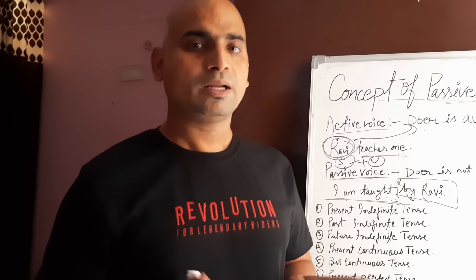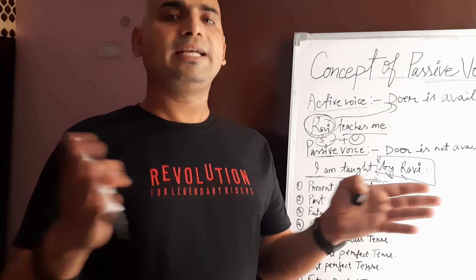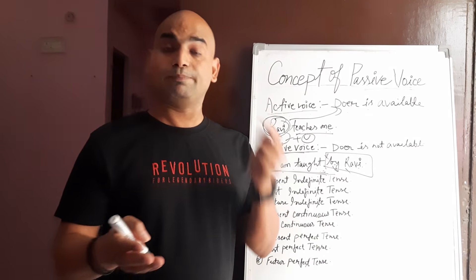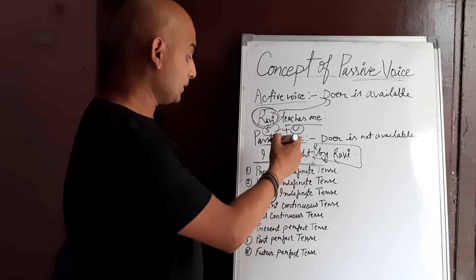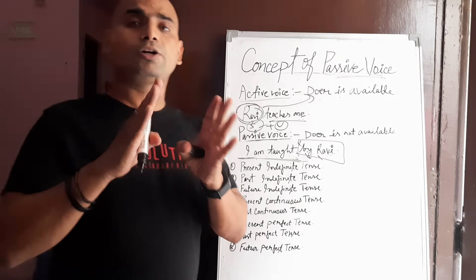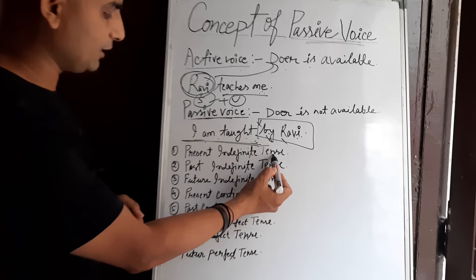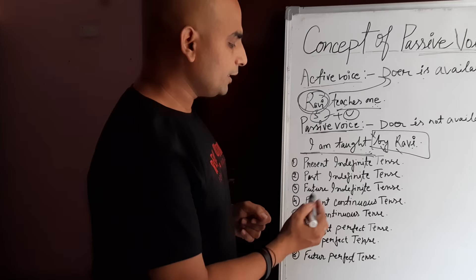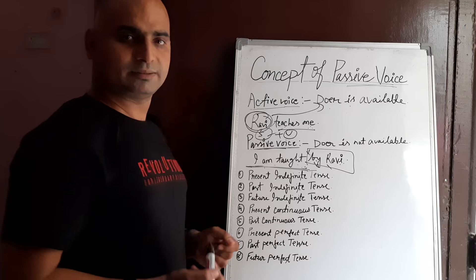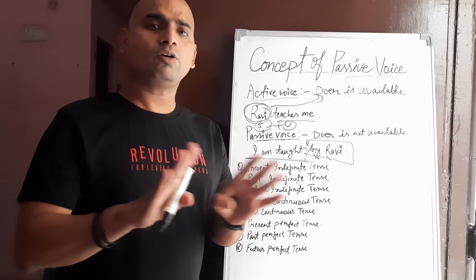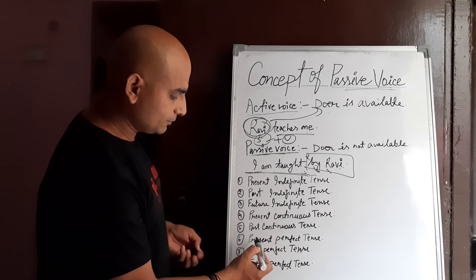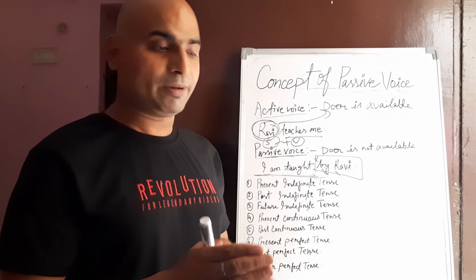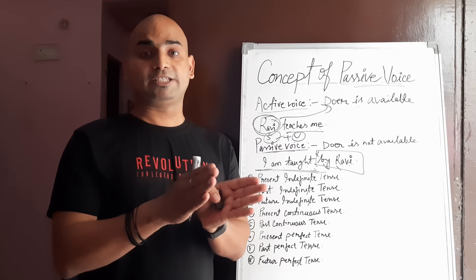As you know, active voice is found in all three tenses — present, past, and future — and all parts: indefinite, perfect, and continuous. But passive voice is not found in all the tenses. It is found in all three indefinite tenses: present indefinite, past indefinite, and future indefinite. In the continuous form, it is found in only two tenses: present continuous and past continuous — there is no passive in future continuous tense. After that, present perfect, past perfect, and future perfect — all three perfect tenses have passive voice.